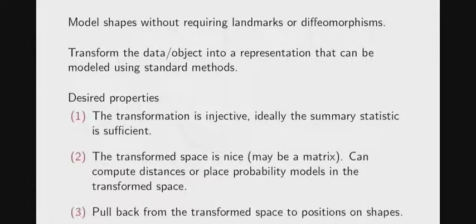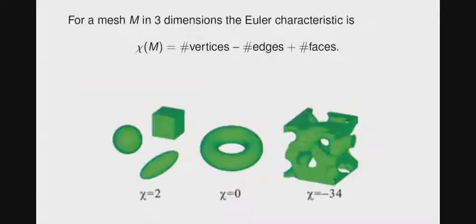What we're going to talk about for most of this is how to model shapes without requiring landmarks and without diffeomorphisms. We're going to look at summaries of these shapes. These summaries are easy to work with, they don't lose information, and you can map them back and interpret what's going on in the shape originally. There are two of them, and the first summary we look at is something called the Euler characteristic.